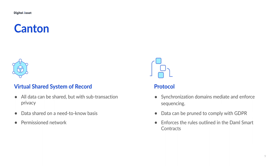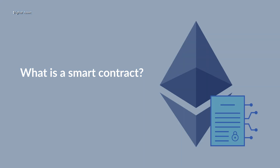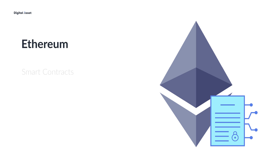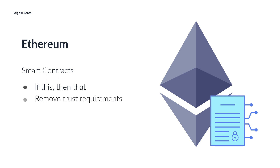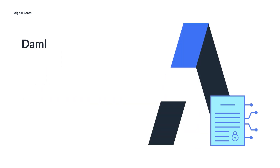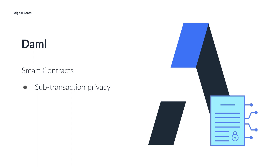The data is then distributed to the various participant nodes according to the rules outlined in the DAML smart contracts. Smart contracts were first developed with the Ethereum blockchain, using a simple if-this-then-that structure that allowed for agreements to be run programmatically. The goal was to have contracts that didn't require trust, because they would be automatically completed when the conditions are met. DAML builds upon this premise of automating contracts, but allows for the transactions to be private. This ability to allow for transaction and even sub-transaction privacy — meaning even the choices made in a contract can be private — is unique to the DAML smart contract language and is fully supported by the Canton network.